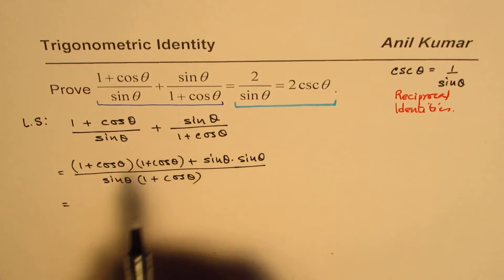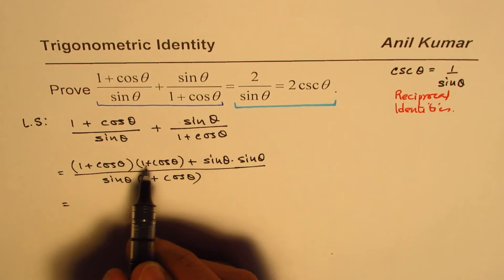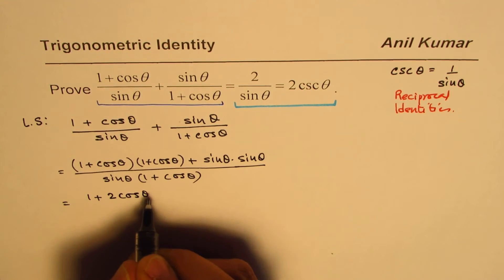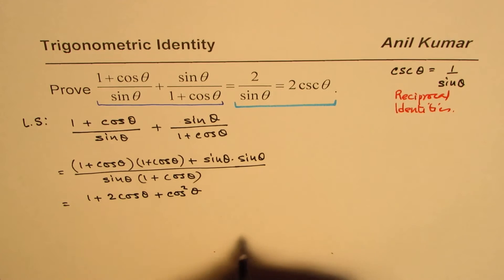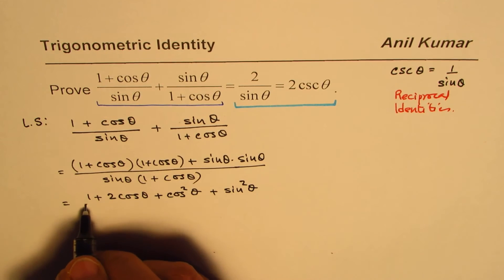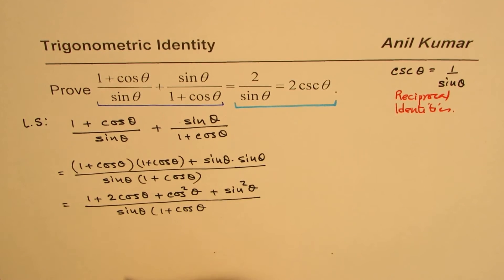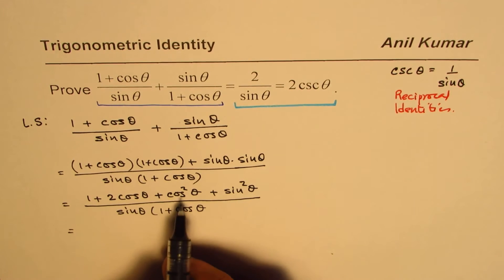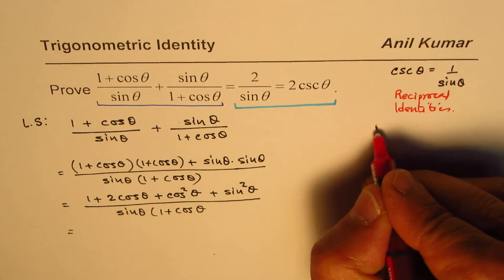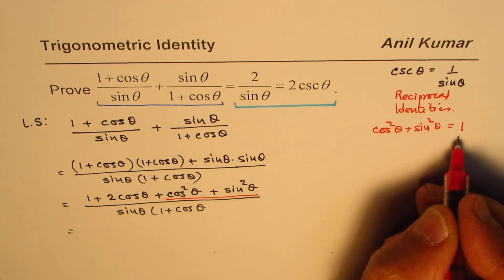Now let us expand (1 + cosθ)²: it is 1 + 2cosθ + cos²θ. We also have sin²θ in the numerator. Now, cos²θ + sin²θ = 1, so that term equals 1.